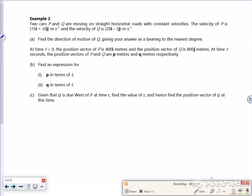So part A says, two cars, P and Q, moving on a straight horizontal road with constant velocities. So we know the acceleration is zero again, because this is a lesson on constant velocities. The velocity of P is 15I plus 20J, the velocity of Q is... Find the direction of motion of Q, give your answer as a bearing.